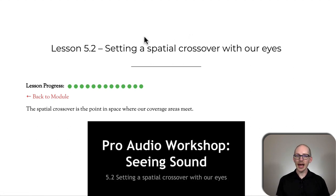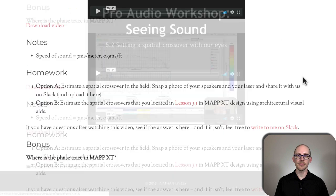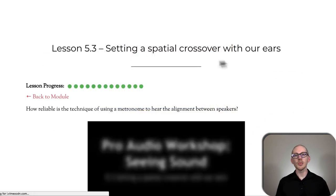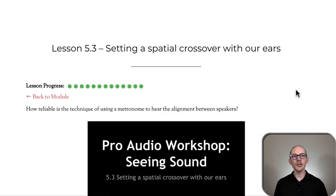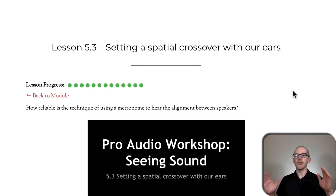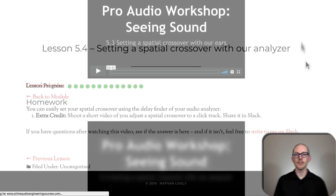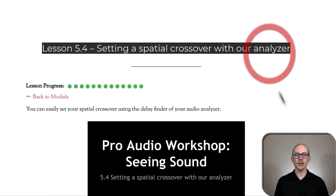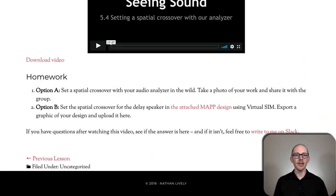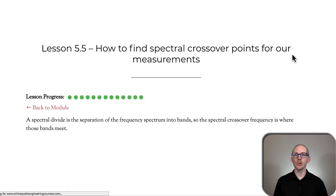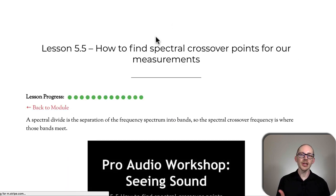Setting a spatial crossover with our eyes — this uses a laser distance measure. Setting a spatial crossover with our ears — this could be using something like a click track or a metronome to find and align the delay times between two different speakers or sources. And then we do the same thing with our analyzer. One of the easiest things to do with our analyzer, though the hard thing is really finding the right measurement position.